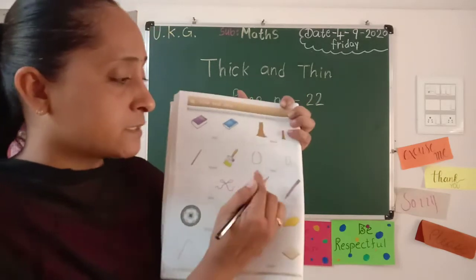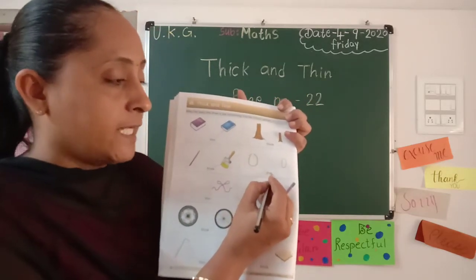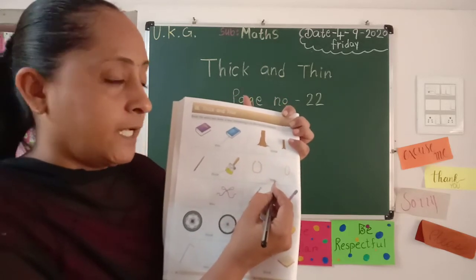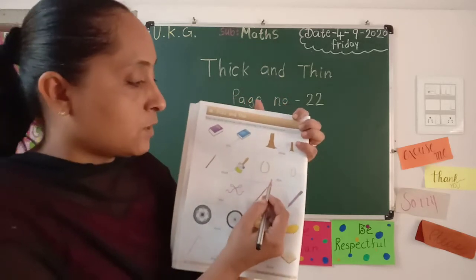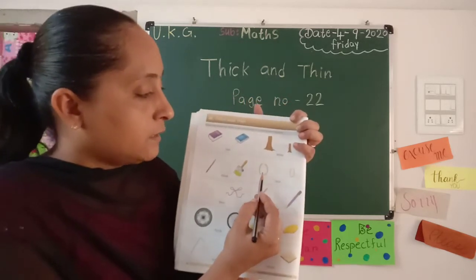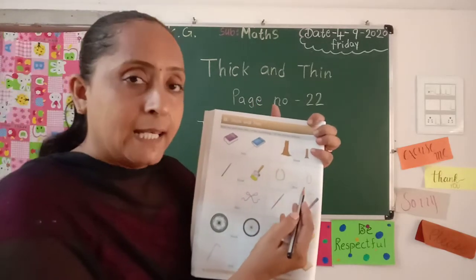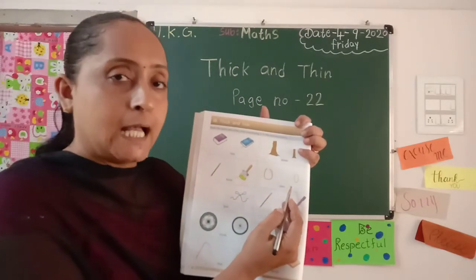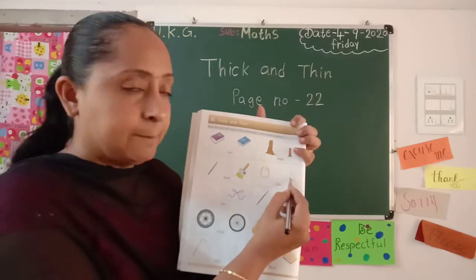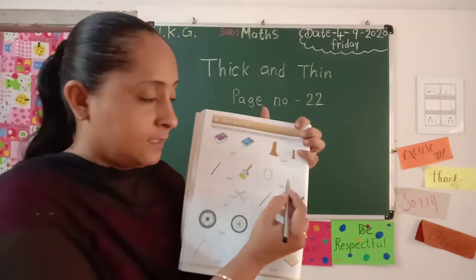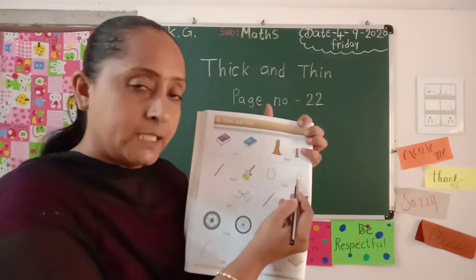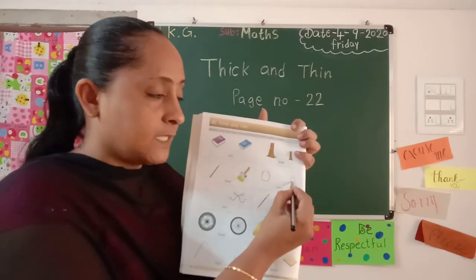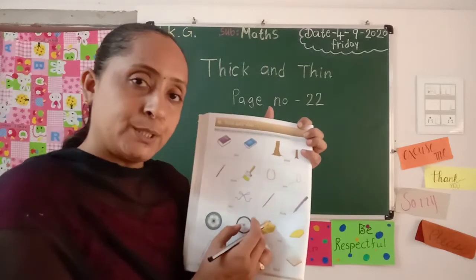Next. T-H-I-N thin. T-H-I-N thin. Thin yani patla. In dono mein se kunsa mala thin hai? Yeh mala patli hai — is pe hume aise chut karenge.